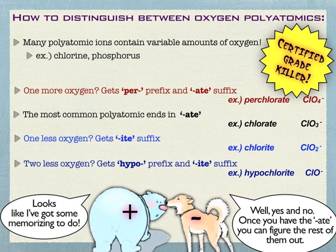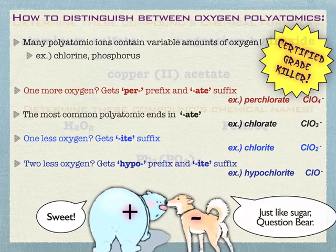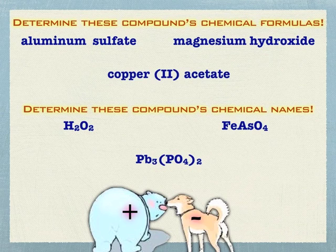You really need to memorize this. This is super important because once we get to acids — which we'll do next — if you don't have your polyatomics really down pat, you'll butcher the acids because it's more complex than this. So go ahead, pause the video and work through these examples. I'll wait for you.